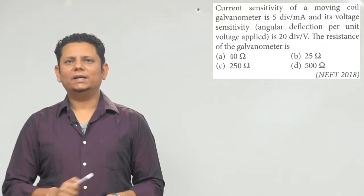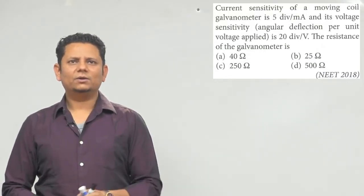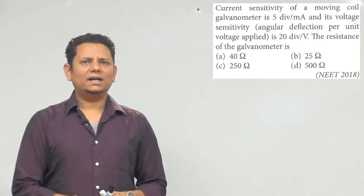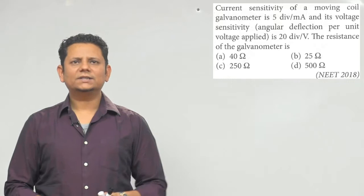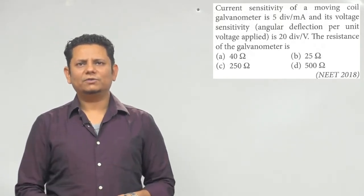Next question says current sensitivity of a moving coil galvanometer is 5 division per milliampere and its voltage sensitivity, angular deflection per unit voltage applied, is 20 division per volt. सवाल है resistance of the galvanometer? Options है 40 ohm, 25 ohm, 250 ohm या 500 ohm.